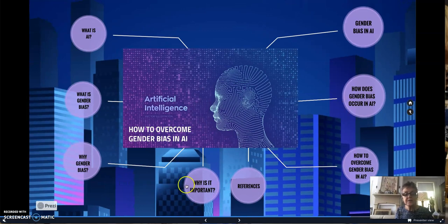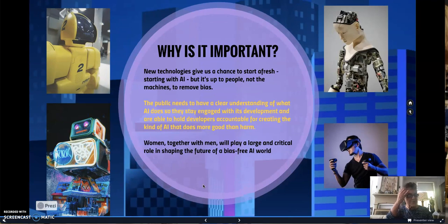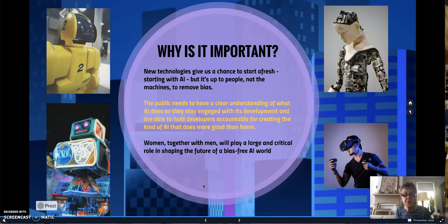Why is it so important? Because we have seen the potential of AI. New technologies give us a chance to start fresh, but it is up to people, not the machine, to remove bias. The public needs to have a clear understanding of what AI does so they stay engaged with its development and are able to hold developers accountable for creating AI that does more good than harm. Women, together with men, will play a large and critical role in shaping the future of a bias-free AI world. We need to involve both men and women in the development of AI and its data, and I think that's the most important thing to resolve the issue of gender bias in AI.